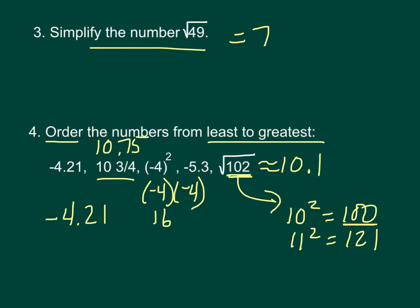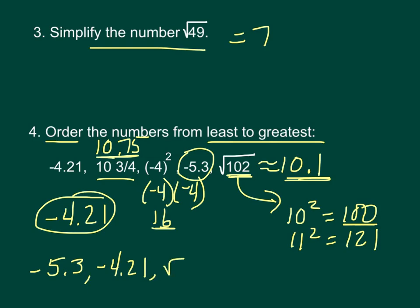Now let's put them in order. We see the smallest one here is your negative 5.3, so you have to put them back in the original order. And then the next one, the next smallest, is negative 4.21. Now our next one going up, we have a 16 here. We have about a 10.1 here and a 10.75. So our next one going up would be the square root of 102.